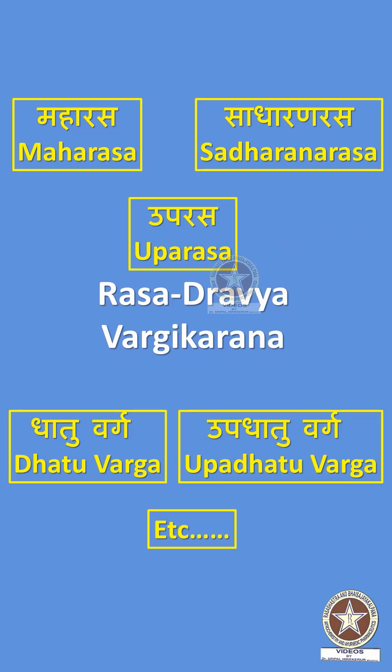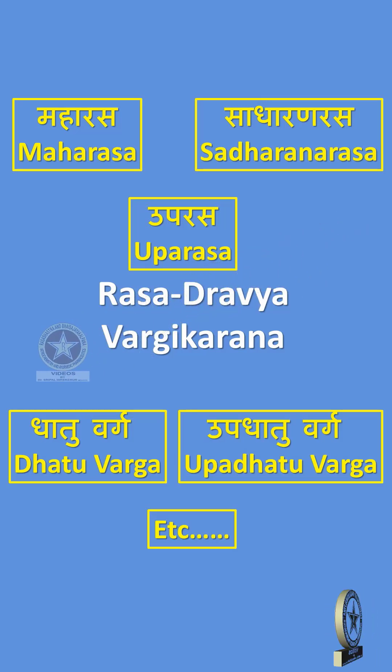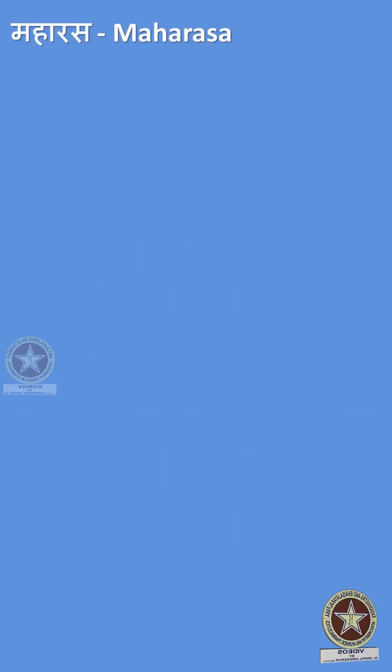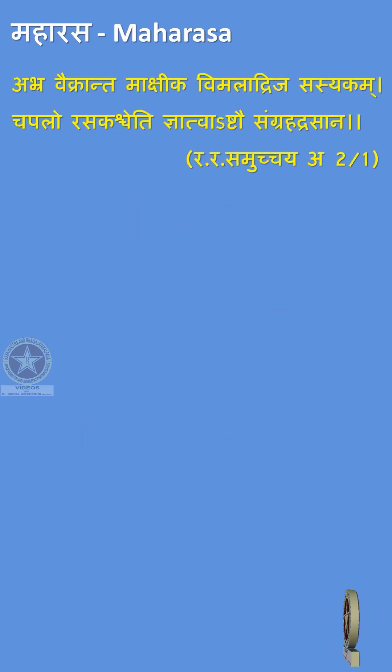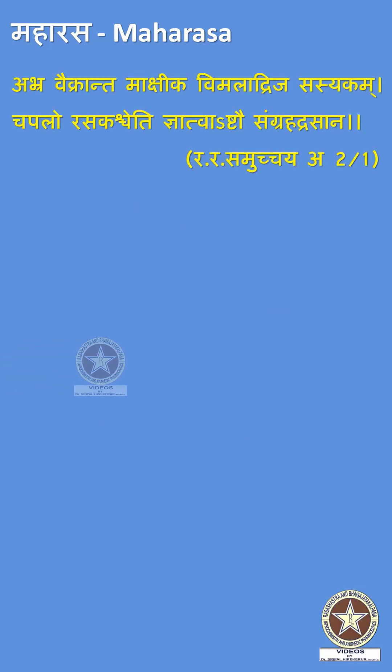To begin with, the first category is Maharasah. Reference: Rasaratna Samuchaya Chapter 2.